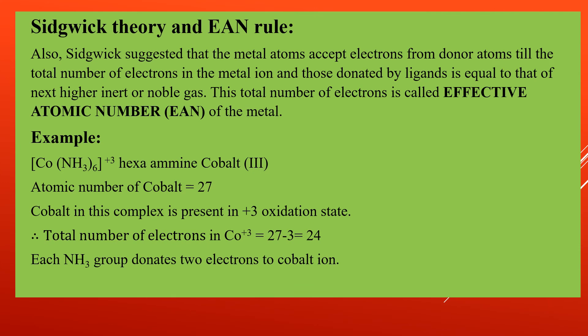Now, Sidgwick theory and the EAN rule. EAN stands for Effective Atomic Number. Sidgwick suggested that the central metal atom accepts electrons from the donor atoms until the total number of electrons in the metal ion plus those donated by the ligands equals the atomic number of the next higher inert gas. This total number of electrons is called the Effective Atomic Number.